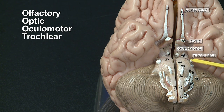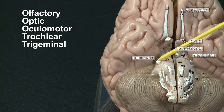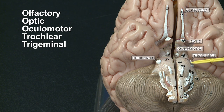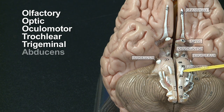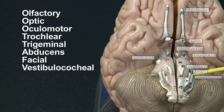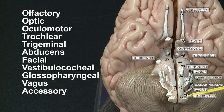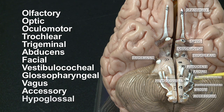Trochlear is the only cranial nerve which exits on the dorsal side of the brain. Then we have trigeminal, abducens, facial, vestibulocochlear, glossopharyngeal, vagus, accessory, and finally hypoglossal.